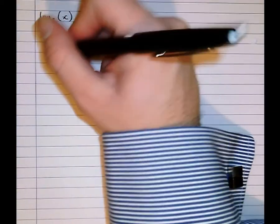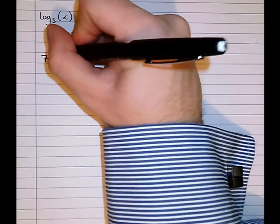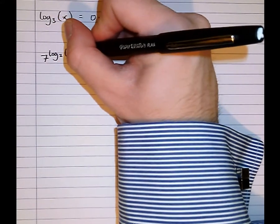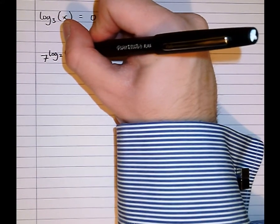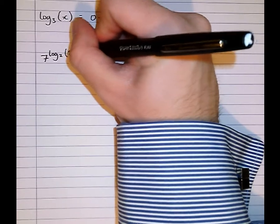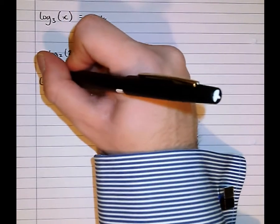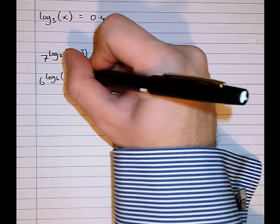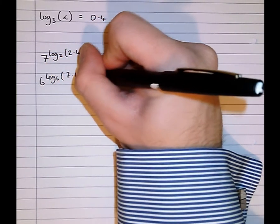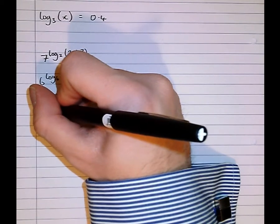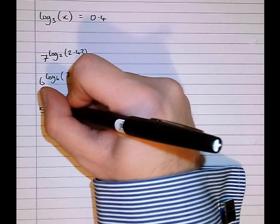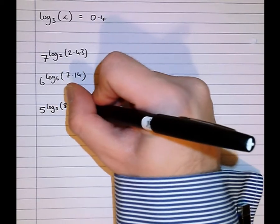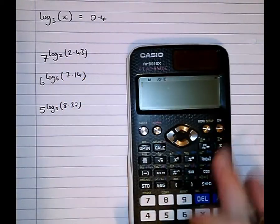First of all, a couple of things that we should type now, calculate and familiarize ourselves with the concept: 7 to the power of log to the base 7 of 2.43, 6 to the power of log to the base 6 of 7.14, 5 to the power of log to the base 5 of 8.37.